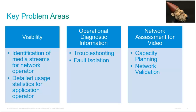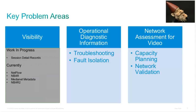The key problem areas for the media monitoring vertical are visibility, operational diagnostic information, and network assessments for video. For visibility, we can tell you information about who's talking to who, how much data is being transferred, what type of applications are being conveyed, who the users are behind those applications, what type of application context is going on — for example, what dial numbers are being used. We augmented existing technologies like NetFlow and NBAR, which is a deep packet inspection engine from Cisco, and we also created an entirely new technology called MediaNet metadata.